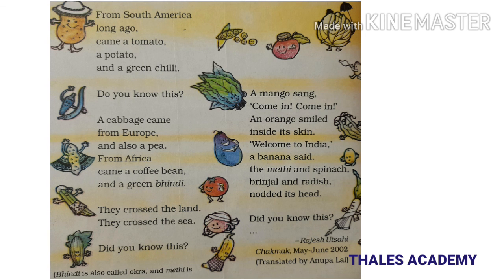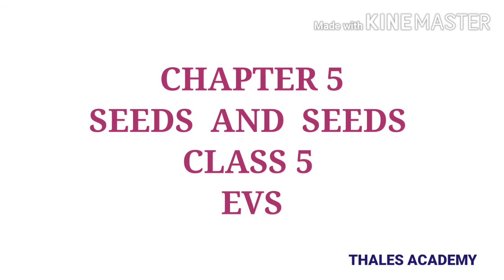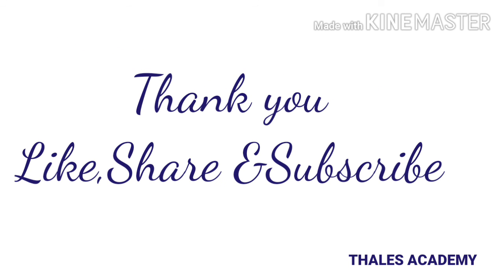Tomato, potato, and green chilies came from South America, whereas cabbage came from Europe. Coffee bean and okra came from Africa. Mango, orange, banana, fenugreek, spinach, brinjal, and radish are grown in India. This is the end of the lesson: Seeds and Seeds, Chapter 5 of EVS Class 5. If you like this video, please share and subscribe. Thank you.